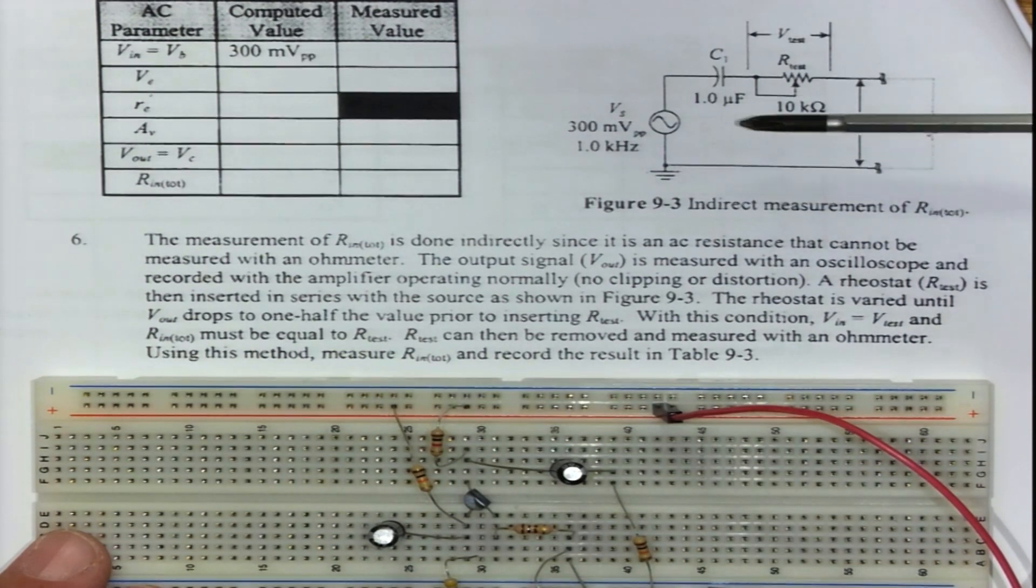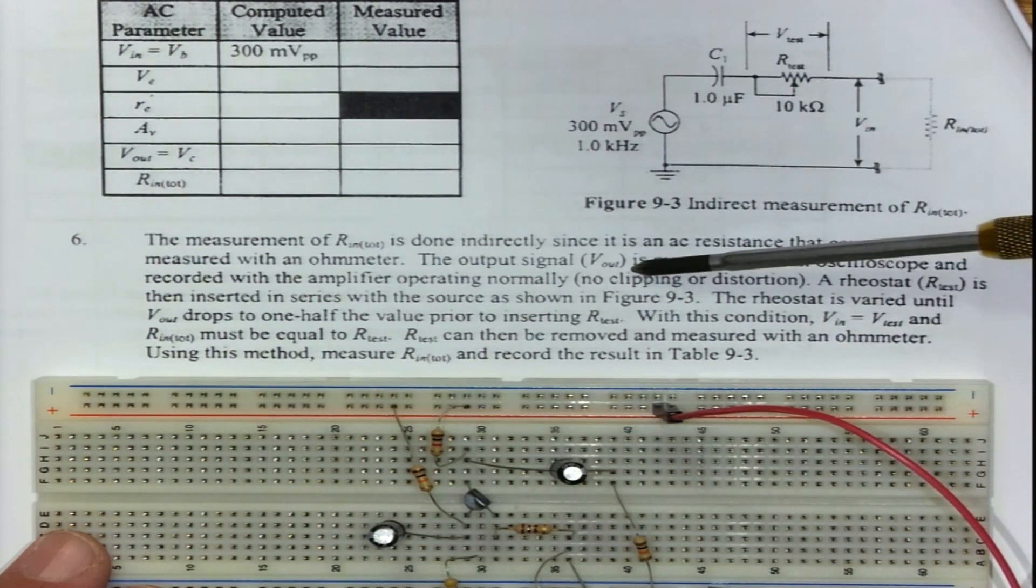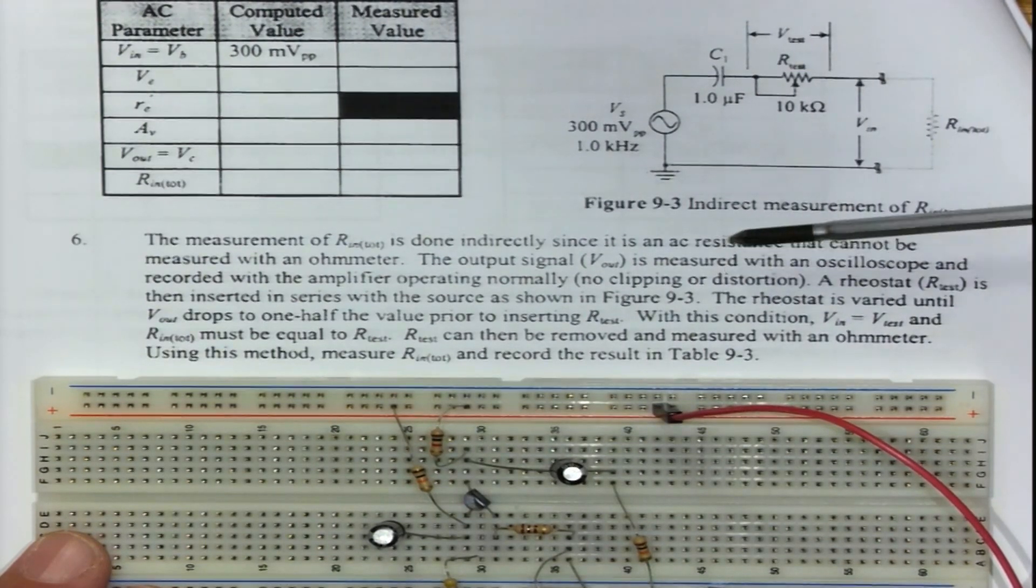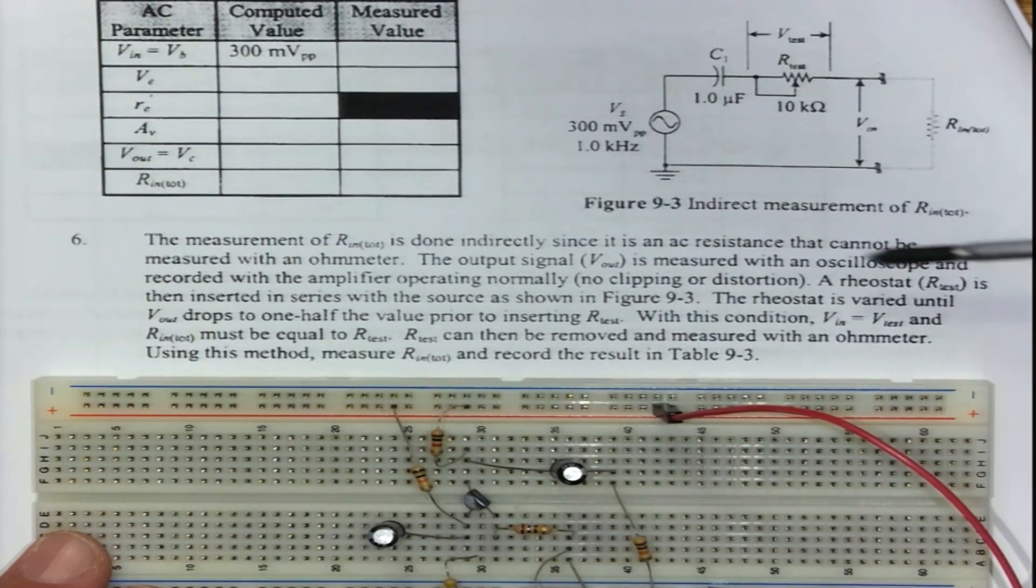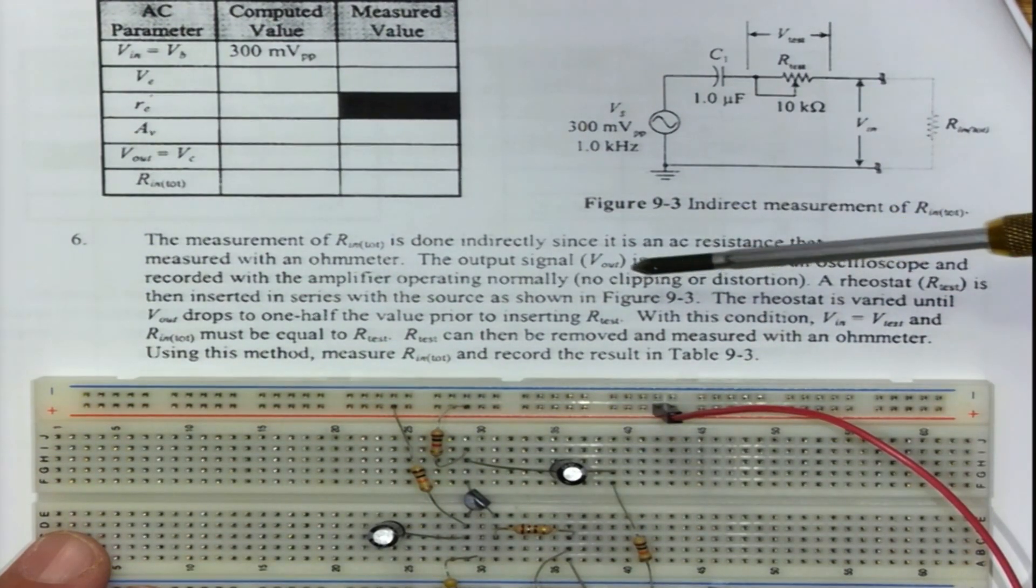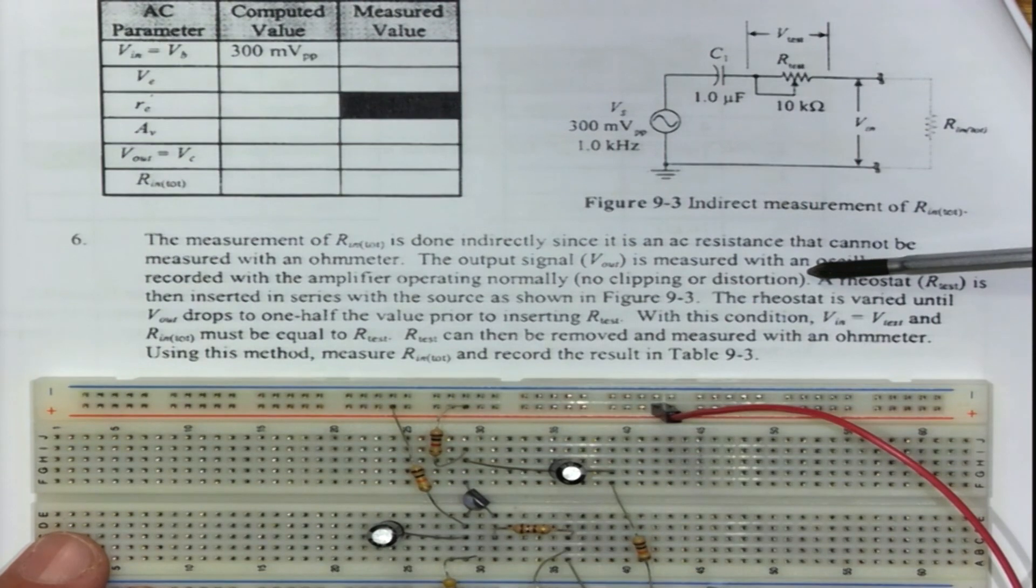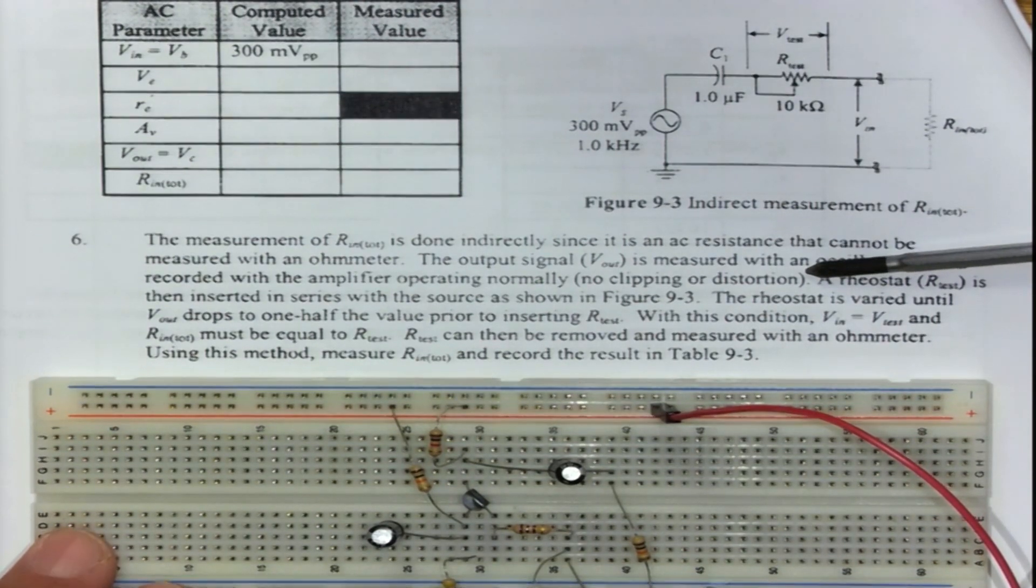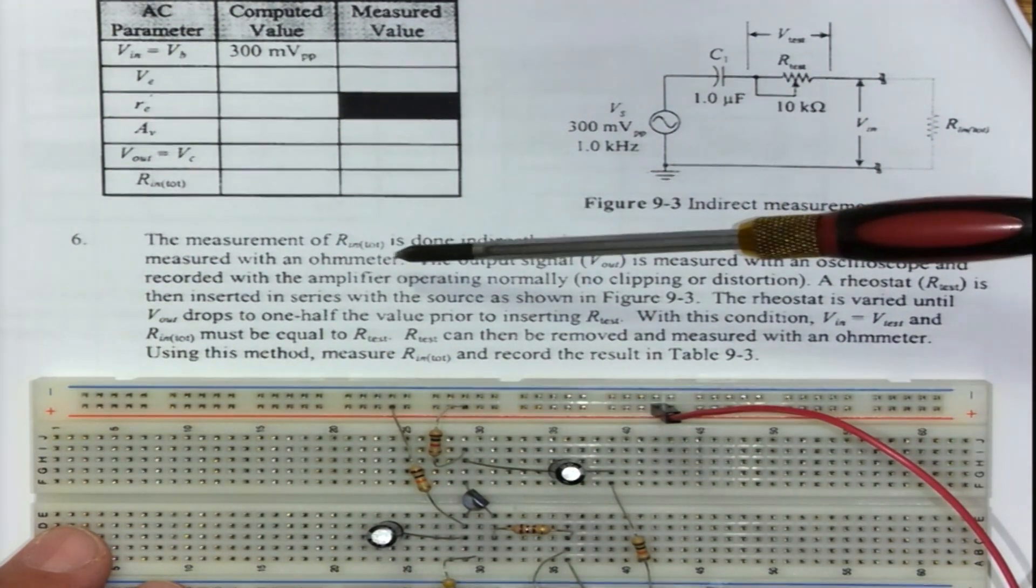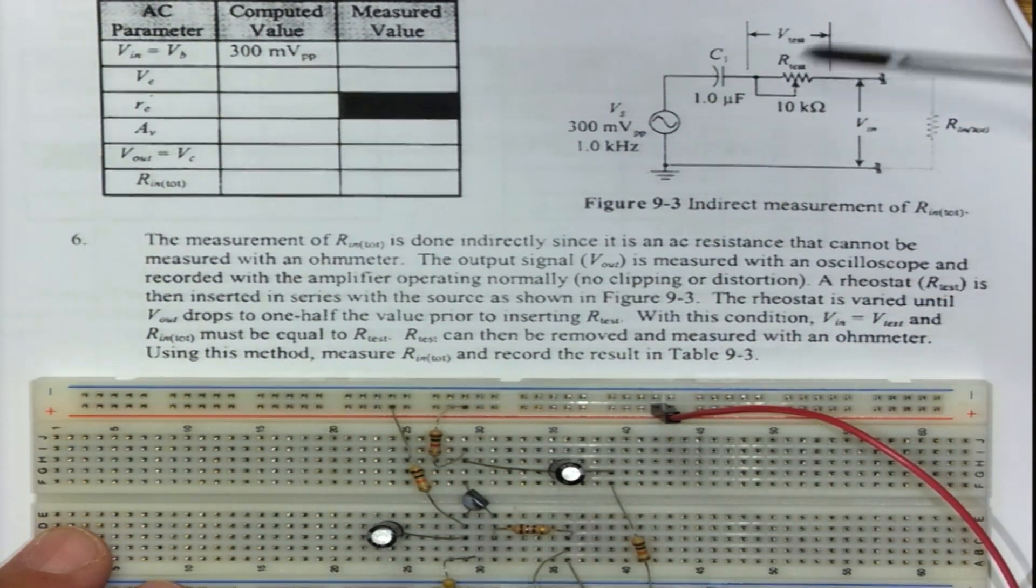We know what the output voltage is from our experiments before. The output signal is measured with an oscilloscope and recorded with the amplifier operating normally, which means no clipping or distortion. We expect a clean sine wave on the output.